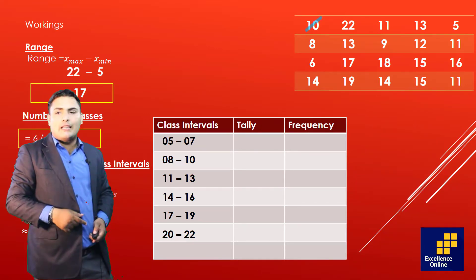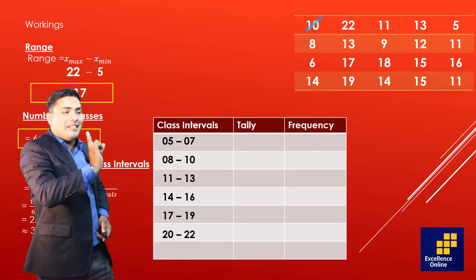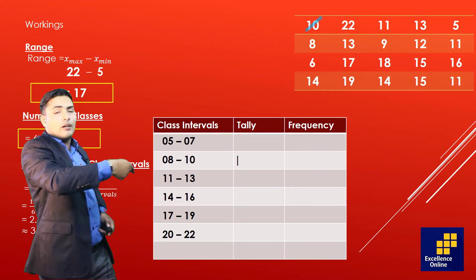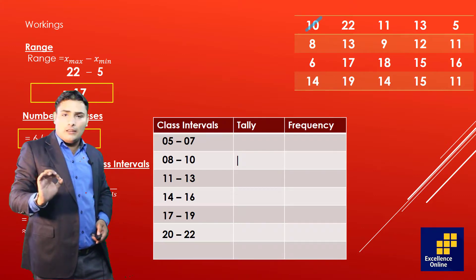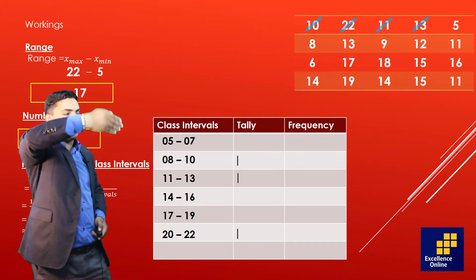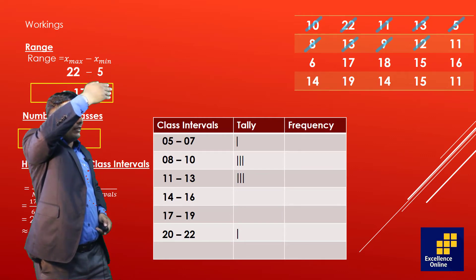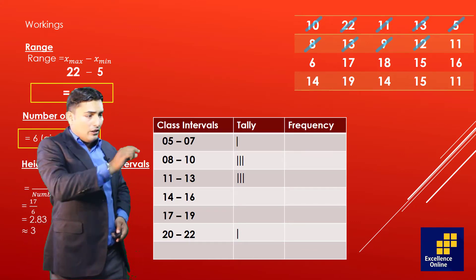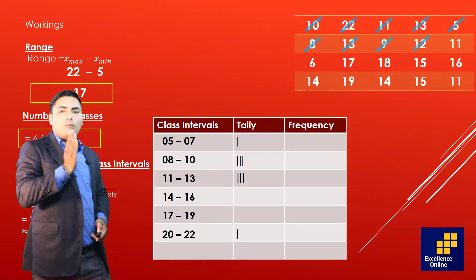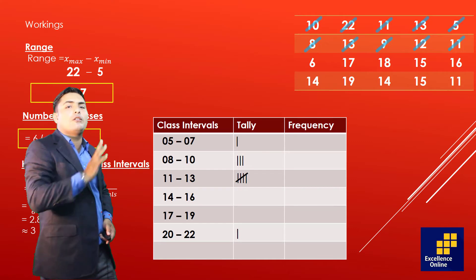Tally में सबसे पहली value 10 है — उसे cross लगाएंगे। 10 पहले group (5-7) में नहीं आता, दूसरे group (8-10) में आता है, तो वहाँ tally में एक बार draw करेंगे। इसी तरह second value 22 है — उसके group में भी एक बार draw करेंगे। याद रखिएगा कि चार बार tally के बाद पाँचवीं बार bundle बनाएं ताके counting में आसانी हो।